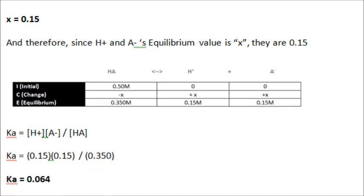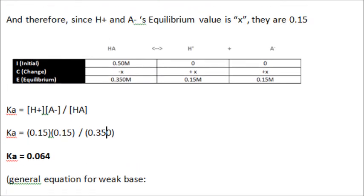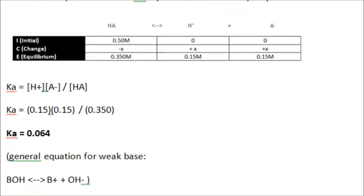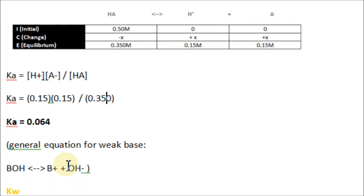These problems are long, but once you get better at them you go quickly. Kb works the exact same way — I'm not going to go through it again. Except the general equation is different because it's a base, not an acid: BOH, double arrow, B-plus plus OH-minus.